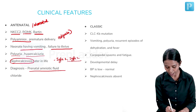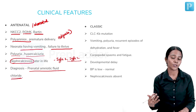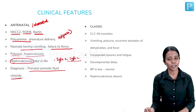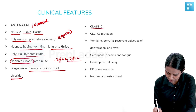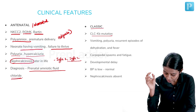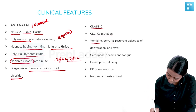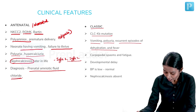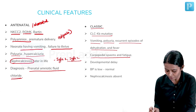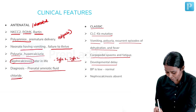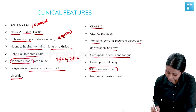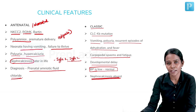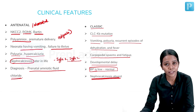Diagnosis can be supported prenatally by measuring amniotic fluid chloride — if high, suspect neonatal Bartter syndrome. Classic Bartter (CLCNKB mutation) presents with vomiting, polyuria, recurrent dehydration and fever, carpopedal spasms, fatigue due to magnesium loss, and developmental delay. Blood pressure is low-normal due to volume loss, and nephrocalcinosis is absent because calcium reabsorption is unaffected.